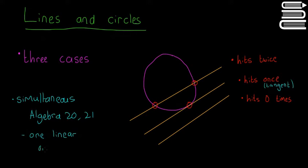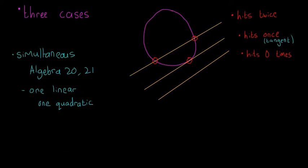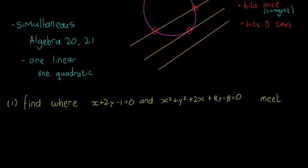And there's one quadratic equation — in this case it's a circle, so there will be a higher power. It's the same method as before. You need to solve these simultaneous equations and determine if the line hits the circle twice, once, or zero times. I'll give one example in this video.